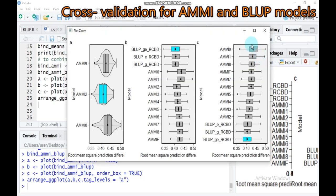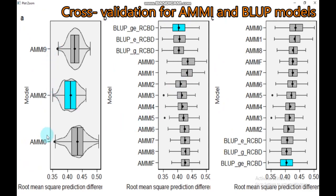As you can see, from the additive main and multiplicative interactive analysis family, the model with axis 2 is best for estimating yield stability. Furthermore, comparing both AMMI and BLUP, the BLUP model is very best compared to others — BLUP is better for yield stability analysis.